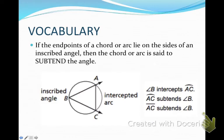If the endpoints of a chord or arc, so like endpoints A and C, lie on the sides of an inscribed angle, then the chord or arc is said to be subtended, is said to subtend the angle.